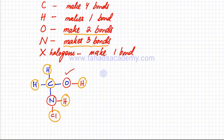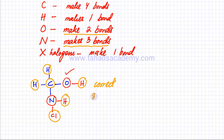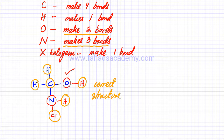So this structure is now complete and we can consider it to be a correct structure — there are no issues with it. You need to do this every time you draw a structure: count all the bonds. Carbon was supposed to make four bonds and it's making four.